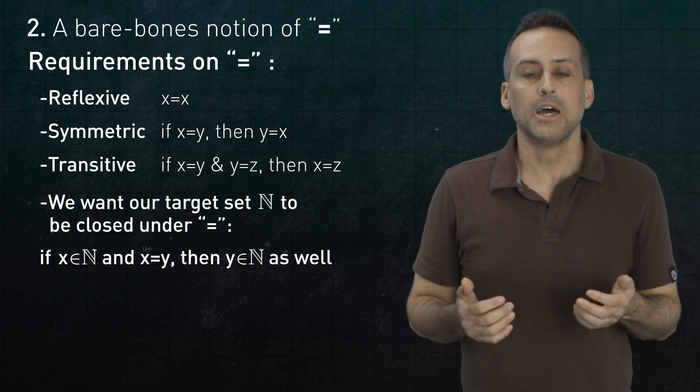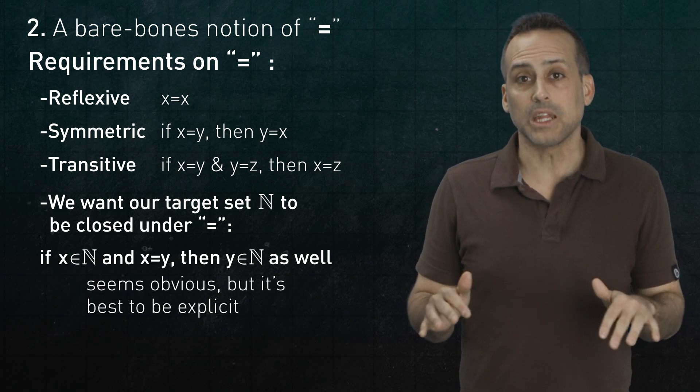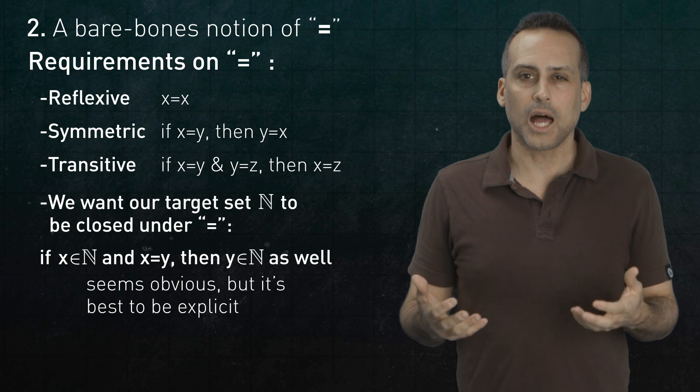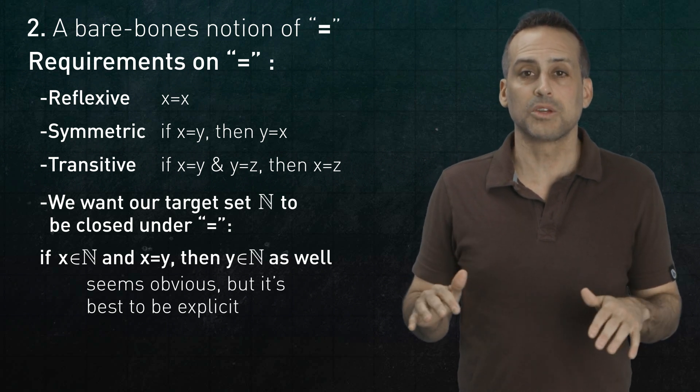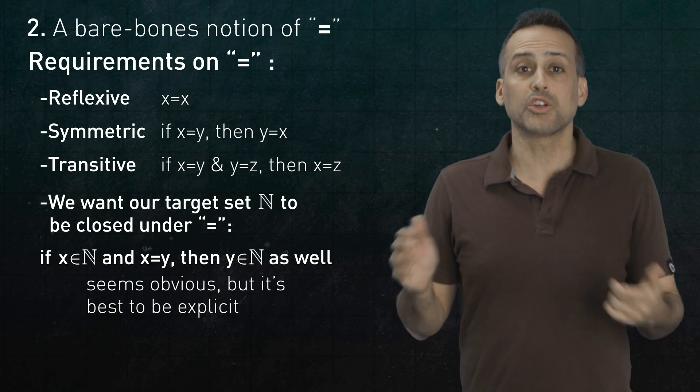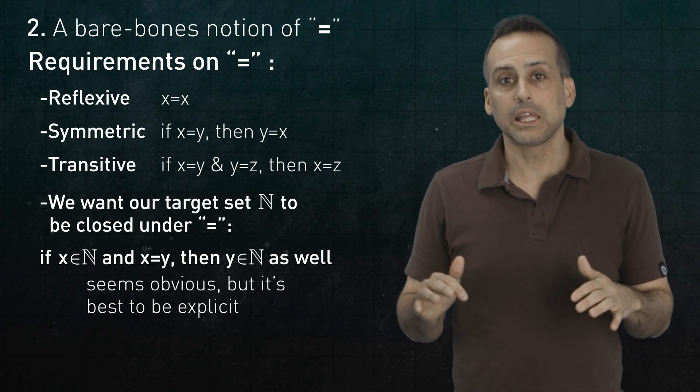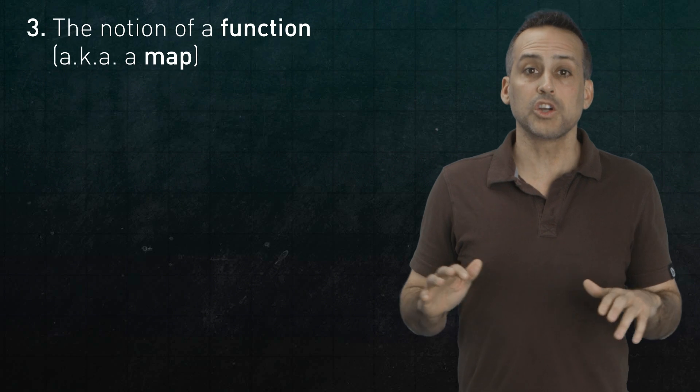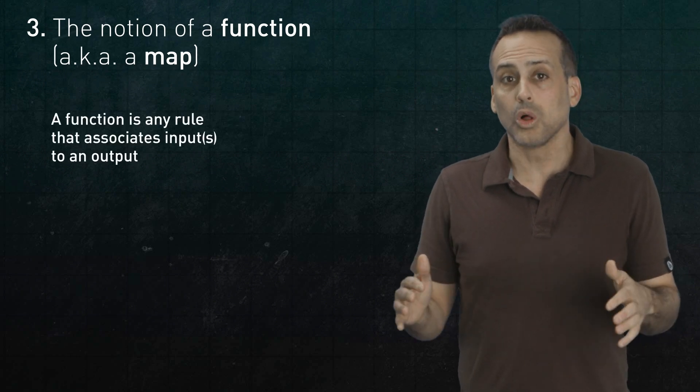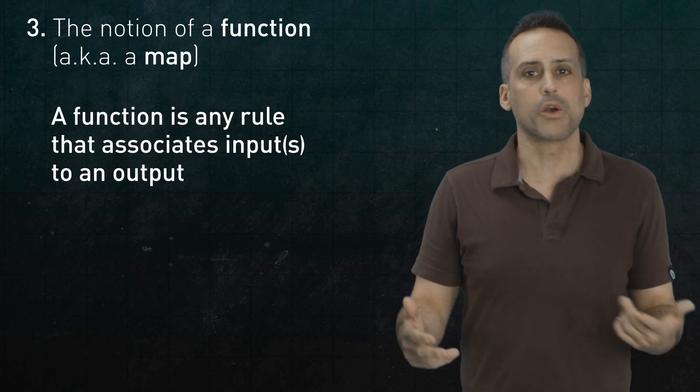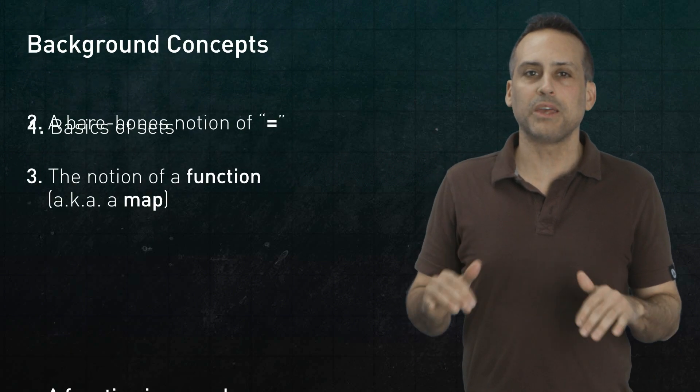Now, that last part may seem self-evident, but when you're laying out mathematical logic, it's best not to leave any assumptions unstated, since that makes it harder to track which parts of an argument actually depend on which other parts. And finally, we'll also rely on the concept of a function or a map, i.e. a rule that associates an output with one or more inputs.